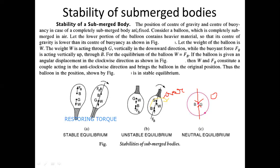To summarize stability of submerged bodies: for stable equilibrium, center of gravity should be below center of buoyancy — restoring torque is generated and the body regains its original condition. For unstable equilibrium, center of buoyancy is below center of gravity — an overturning couple is generated and the body keeps rotating. For neutral equilibrium, center of buoyancy and center of gravity are at the same point — no couple is generated and the body remains in whatever condition it is placed.